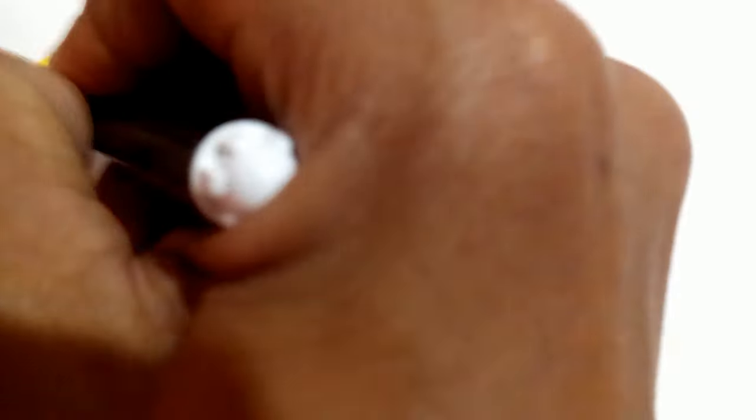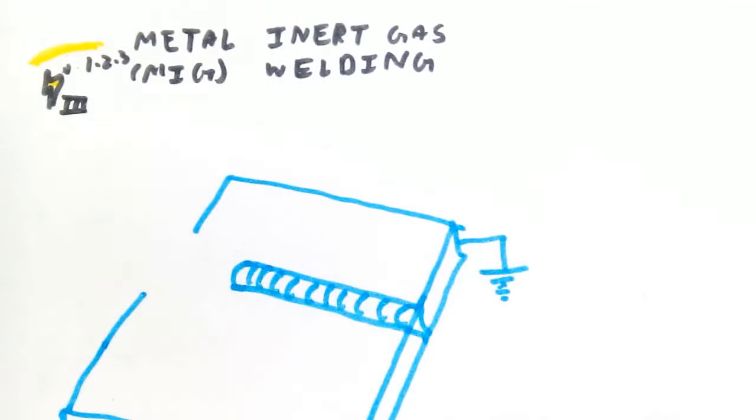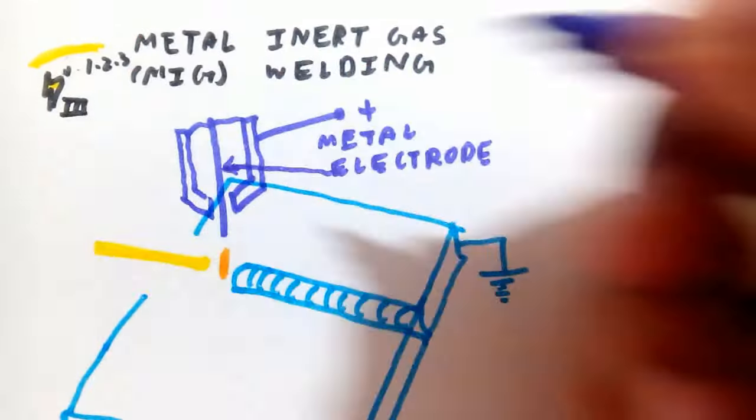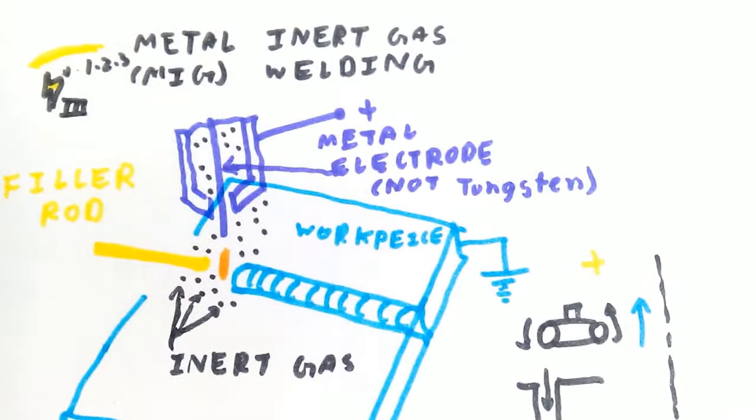Third in line is metal inert gas or MIG welding. Here too, coalescence is achieved with a metal electrode. Advantages include faster production speed, deep penetration with a compromise in complexity.